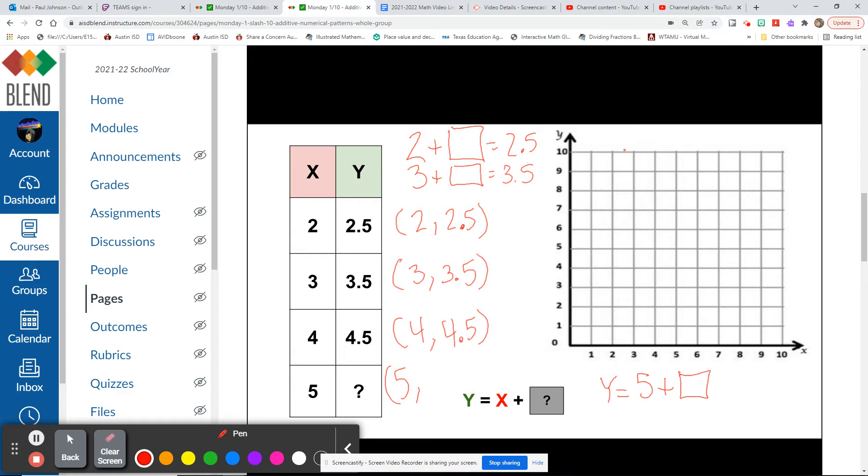So first off, let's figure out what can we add to 2 to get 2 and 5 tenths? What can we add to 3 to get 3 and 5 tenths? If you said 5 tenths, yes, 2 plus 5 tenths is 2 and 5 tenths. 3 plus 5 tenths is 3 and 5 tenths.